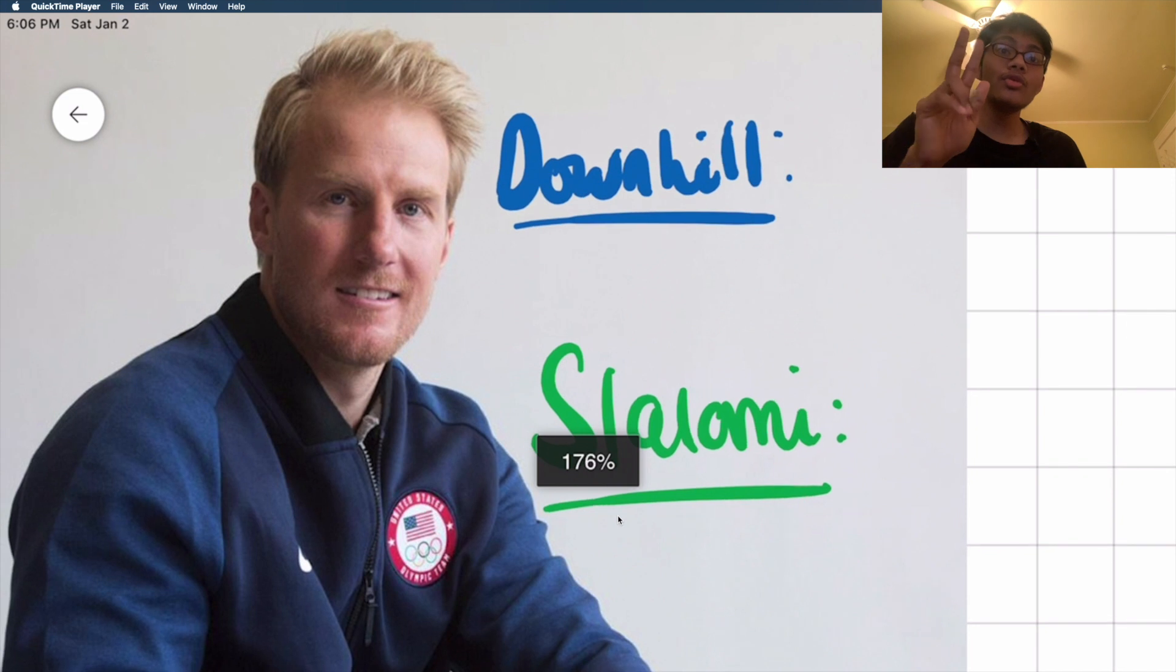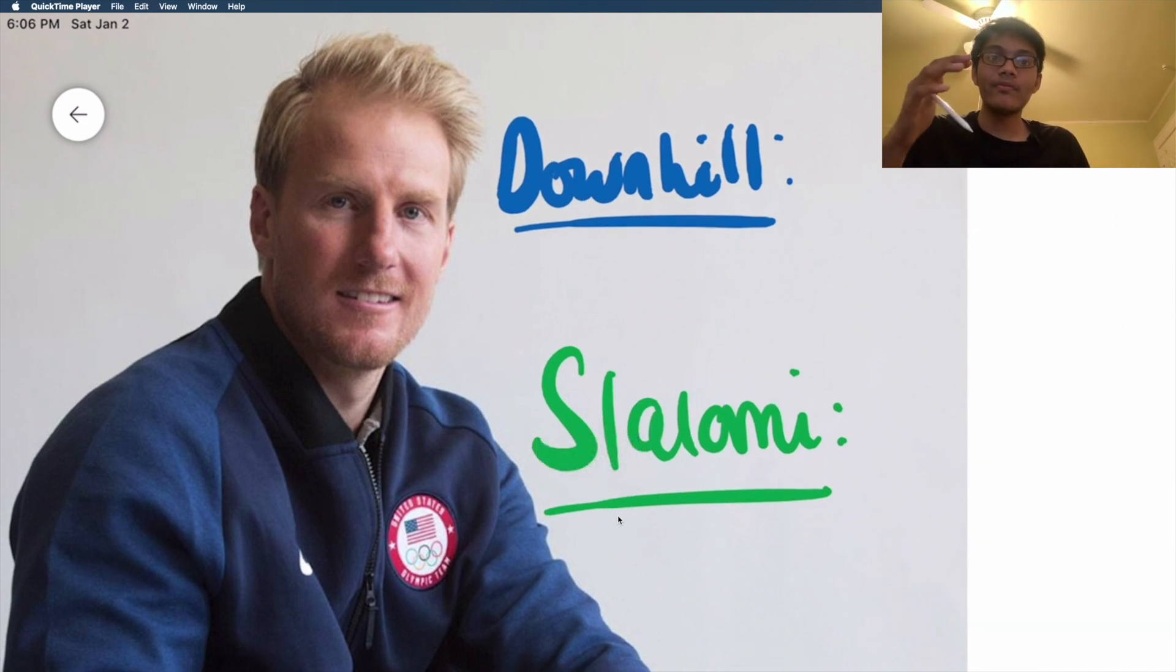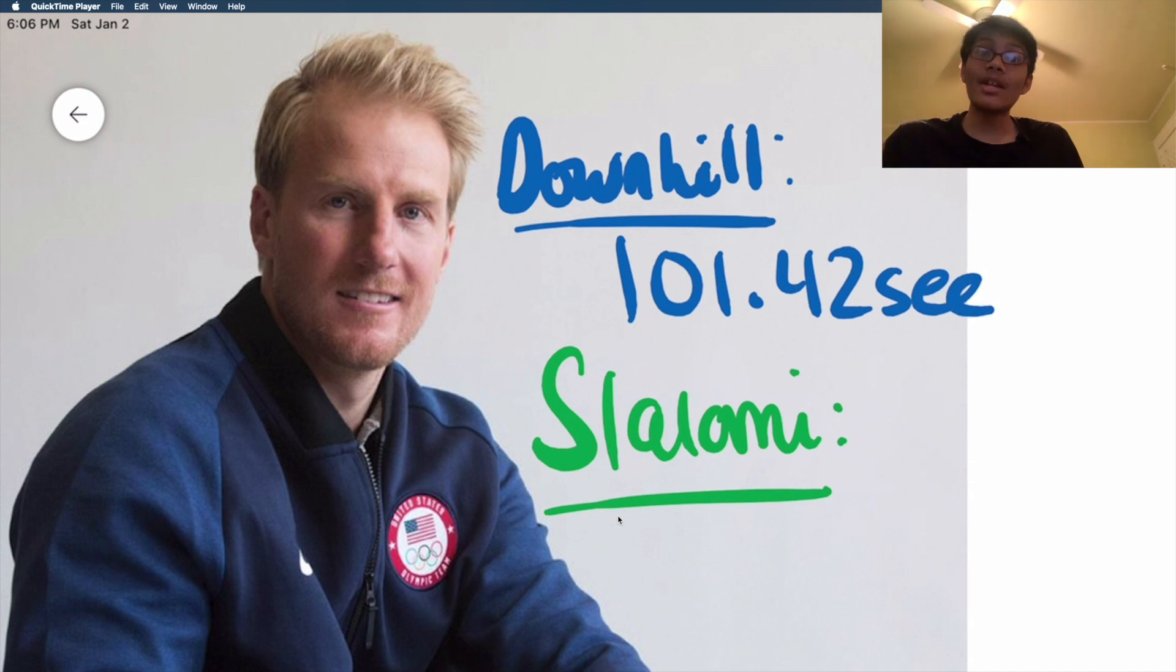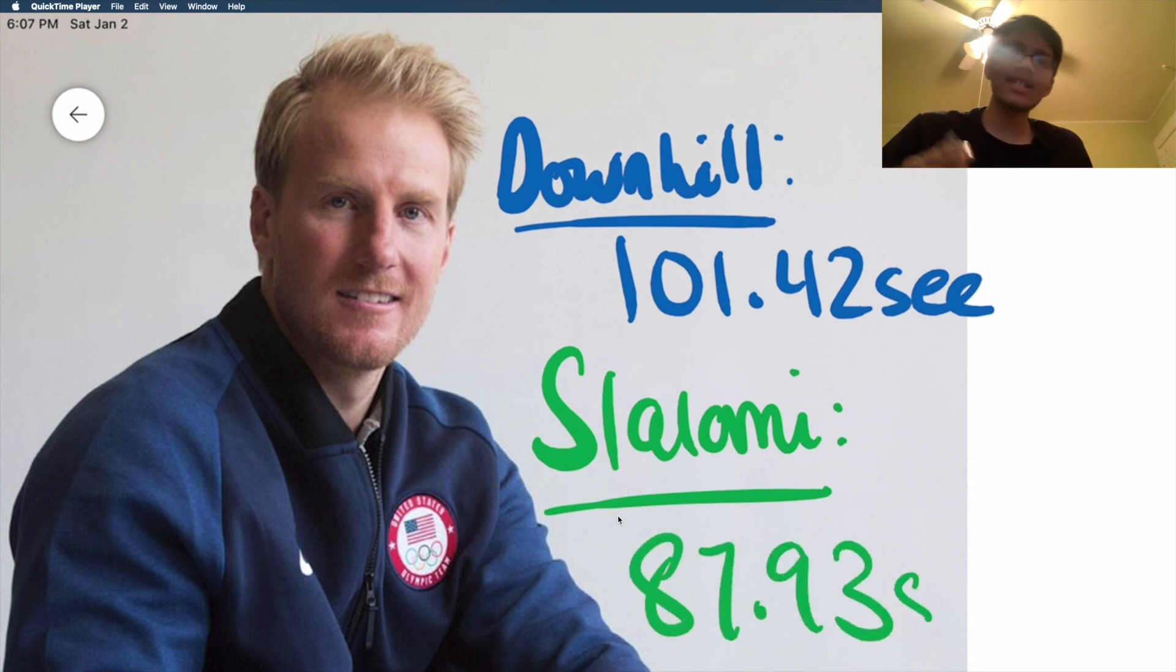Ted is really good at skiing and he competes in these two different types of skiing races. In the downhill he has 101.42 seconds, so that's how long it takes for him to complete that race. And for the Slalomi, he's a bit better. He takes 87.93 seconds to complete the Slalomi, which is a kind of skiing race that takes place in the US Olympics.